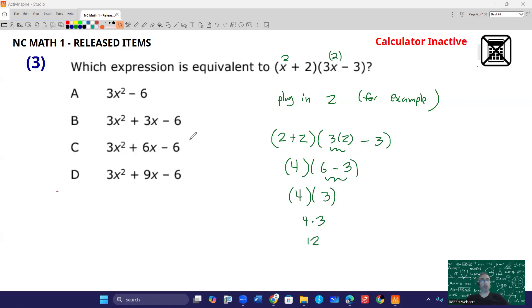Okay, what do I do with this information? Well, hopefully only one of your answer choices gives you 12 when you plug in 2. So let's see if that is the case. So if I do 3 times 2 squared, minus 6. That's 3 times 4 minus 6. That's 12 minus 6. That's 6. No!